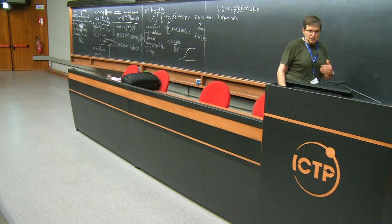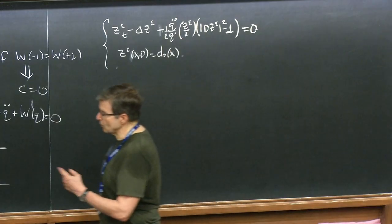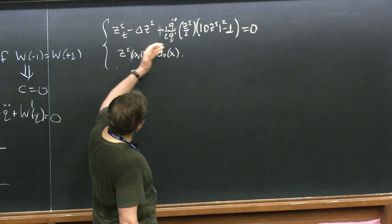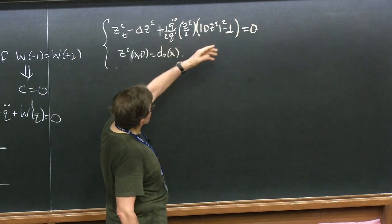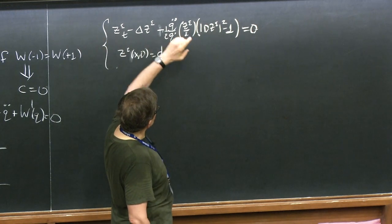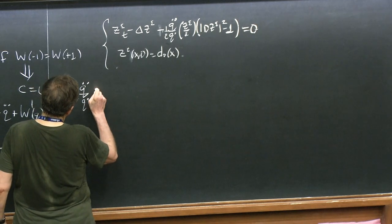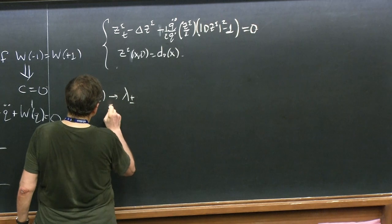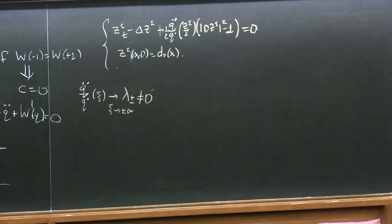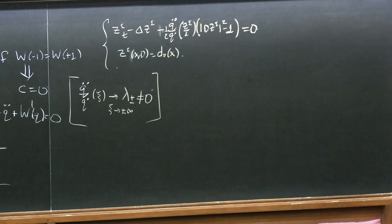Clearly I want to send epsilon to zero. There is an epsilon here — this was the only term with a 1 over epsilon squared. So I want to let epsilon go to zero. The only thing I'm going to get, if the z epsilon has a limit, is that |DZ|² equals 1. Multiply by epsilon, let epsilon go to zero. This coefficient goes to two different limits — you can compute them easily.